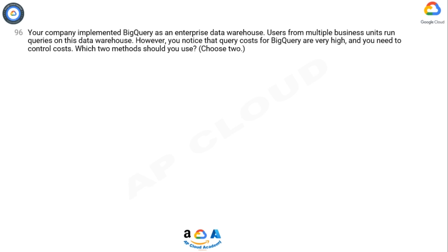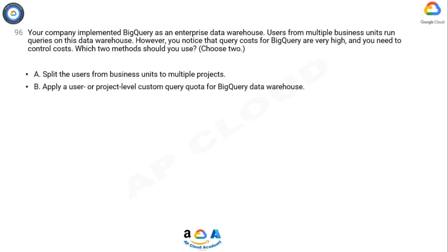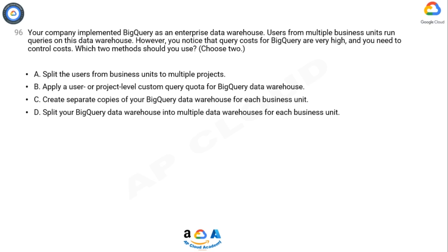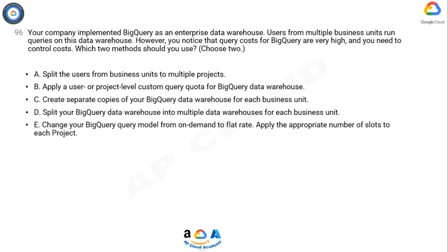Which two methods should you use? Choose two. A. Split the users from business units to multiple projects. B. Apply user or project-level custom query quota for BigQuery data warehouse. C. Create separate copies of your BigQuery data warehouse for each business unit. D. Split your BigQuery data warehouse into multiple data warehouses for each business unit. E. Change your BigQuery query model from on-demand to flat rate. Apply the appropriate number of slots to each project.